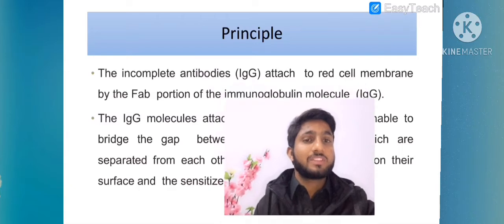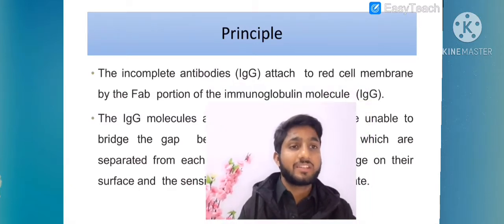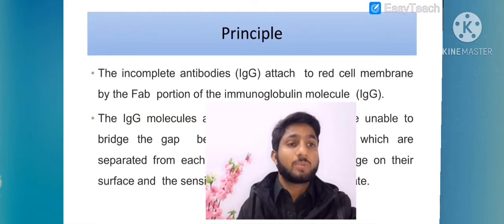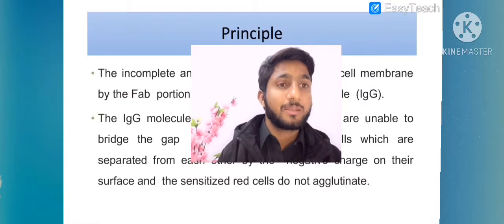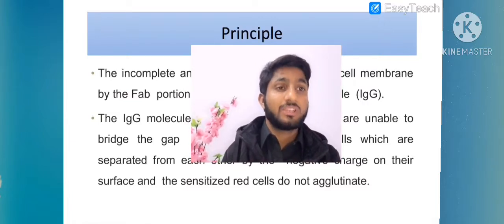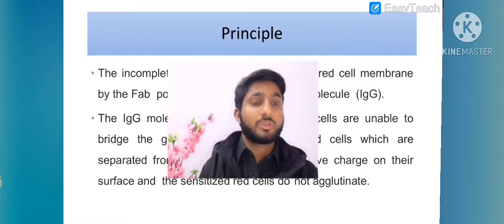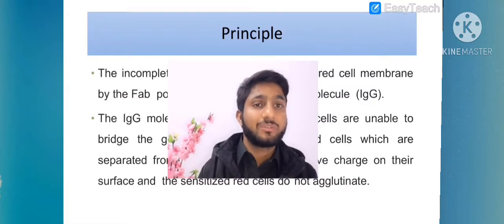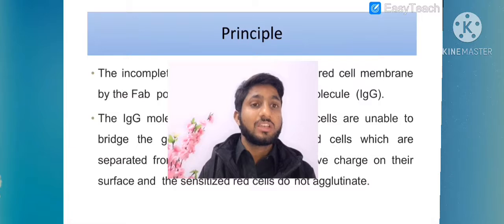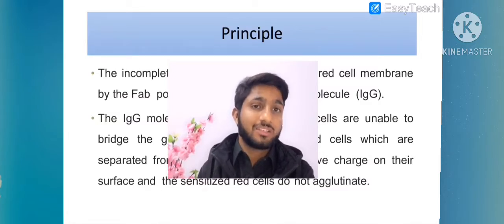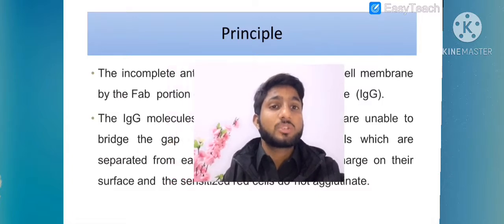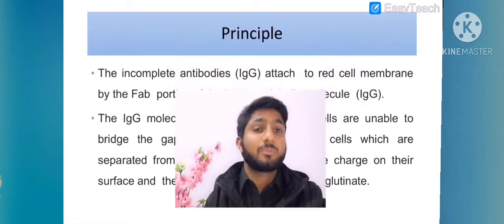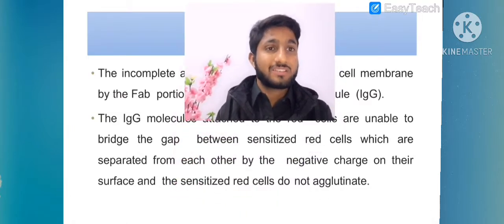Now we will discuss the principle. The incomplete IgG antibodies attach to red cell membrane by the Fab portion of the immunoglobulin molecule. When we talk about red cell testing, the antibody can be divided into two major parts: the Fab or variable region which binds antigens, and the FC region which is responsible for the catalytic activity of the antibody. The Fab portion will bind to red cells.